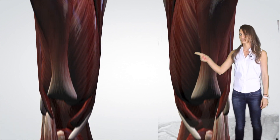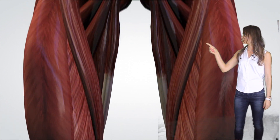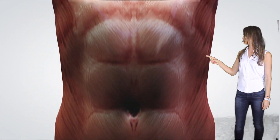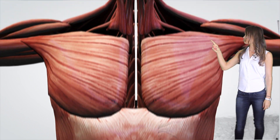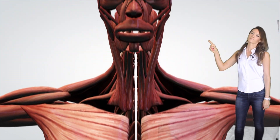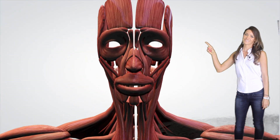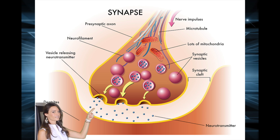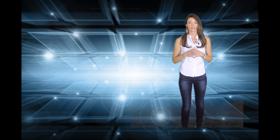Myasthenia gravis is a neuromuscular disorder causing weakness and abnormal fatigue of the muscles. It is an autoimmune disease thought to be caused by antibodies being produced which interfere with the communication at the neuromuscular junction.